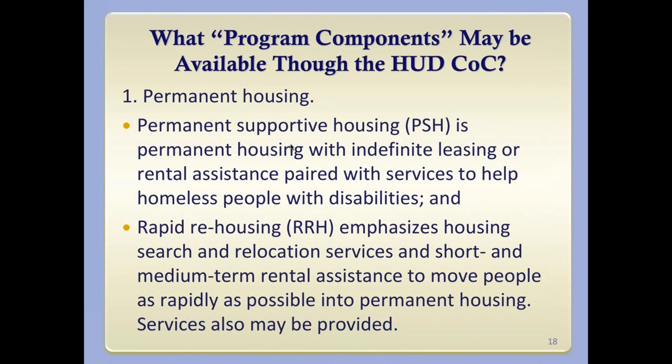The first program component available through HUD homeless assistance is permanent housing. This can be permanent supportive housing — PSH — which is permanent housing with indefinite leasing or rental assistance paired with services to help people who have disabilities. Also considered under the permanent housing category is rapid rehousing, which emphasizes housing search, relocation, and shorter to medium-term rental assistance to move people as quickly as possible into permanent housing. Services may also be provided with rapid rehousing funds.